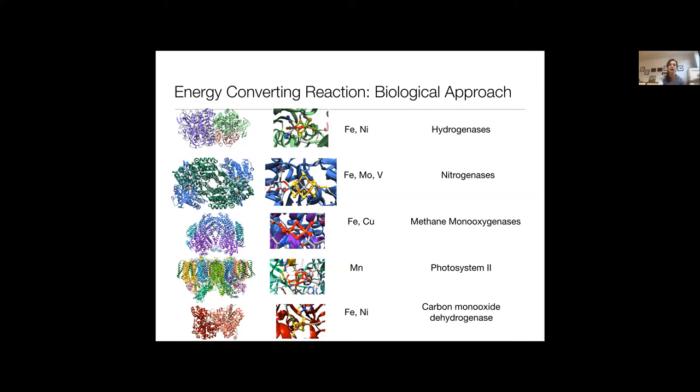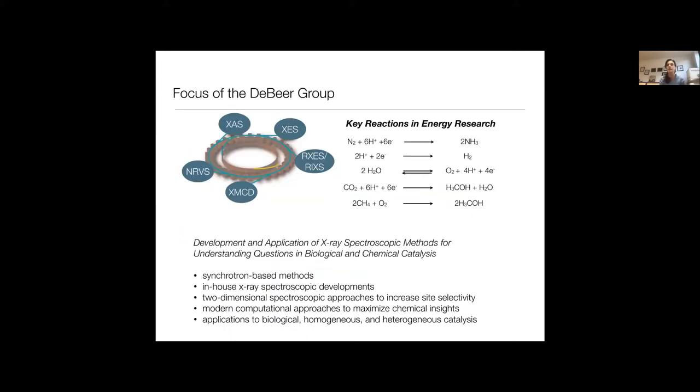And so when we really want to understand, we want to know on an atomic level what's happening at this active site, but also how does the whole protein system integrate to best facilitate these reactions to deliver electrons and protons at the time that we need it. And so there's really a complex system understanding that we need. And the question is, how do we go about achieving this detailed atomic level understanding?